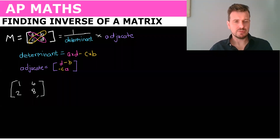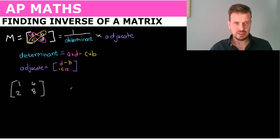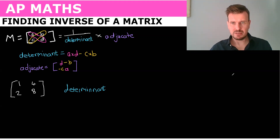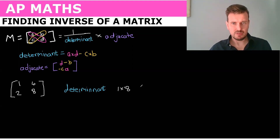For this example we are looking at the determinant first. We get a times d, which is one times eight, and c times b, which is two times four, and we get zero.